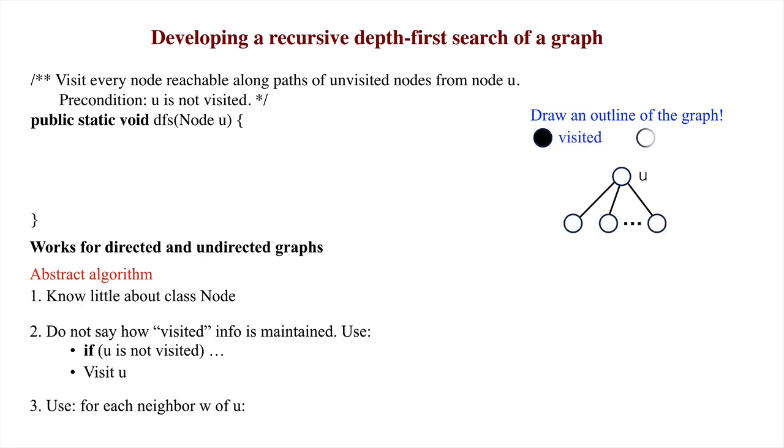Visited nodes are black, and unvisited nodes are white. Thus, U is white, and since we don't know what U's neighbors are, we make two white and one black.